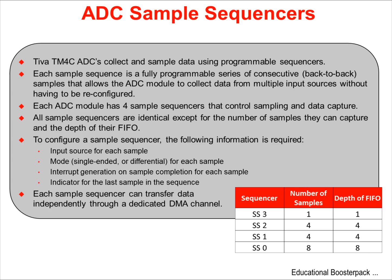In order to configure a sample sequence, the following information is required for each sample: the input source, whether the mode is single-ended or differential, whether or not to generate an interrupt, and whether this is the final sample in the sequence. Each sample sequencer can then transfer its data from the FIFO independently using a dedicated DMA channel.